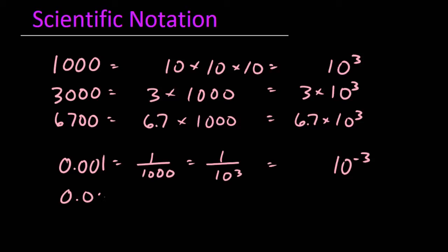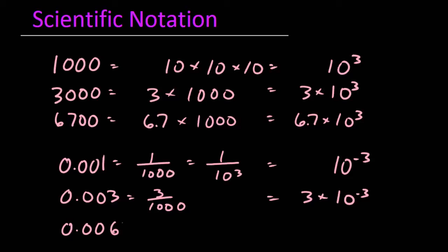A number that is 3 times as big would be written as 0.003, which would be read as 3 one-thousandths, which would be the same as 3 times 10 to the negative third. Finally, if we looked at the number 0.0067, this number would be 6.7 times as big as 1 one-thousandth, and we could write it as 6.7 times 10 to the negative third.